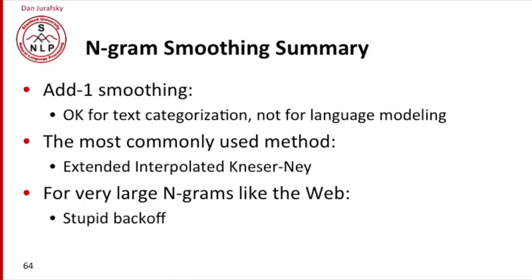So in summary for smoothing so far, add one smoothing is okay for text categorization, but it's not recommended for language modeling. The most commonly used method we'll discuss in the advanced section of this week is the Kneser-Ney algorithm or the extended interpolated Kneser-Ney algorithm. But for very large n-grams like situations where you're using the web, simplistic algorithms like stupid backoff actually work quite well.